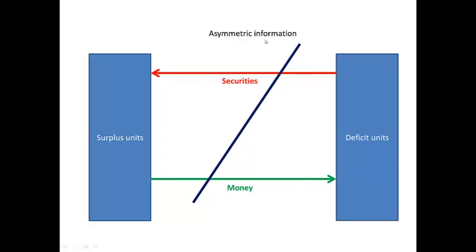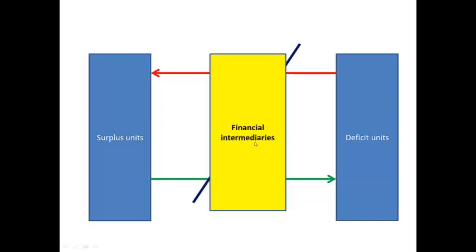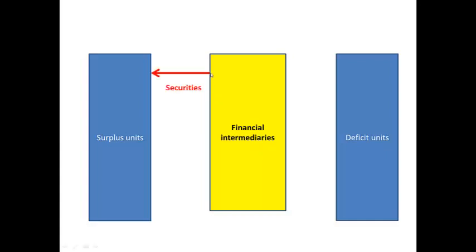We call this asymmetric information — all parties involved do not have access to the same information. Due to these problems with direct financing, we have financial intermediaries in the economy. Financial intermediaries help to overcome the problems related to direct financing. They issue securities to the surplus units against themselves, and the money then flows from the surplus units to the financial intermediaries, who can then provide loans to the deficit units. Examples of securities that can be issued by financial intermediaries include negotiable certificates of deposit, which are issued by banks.